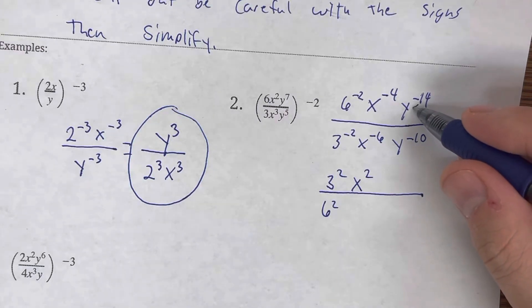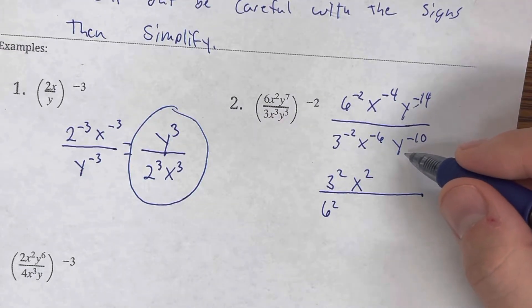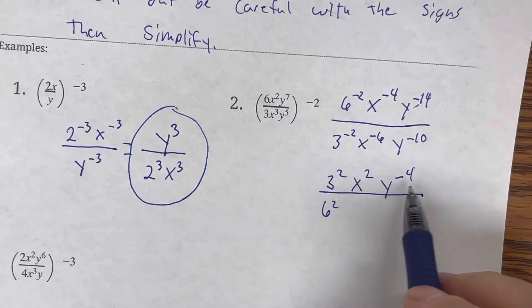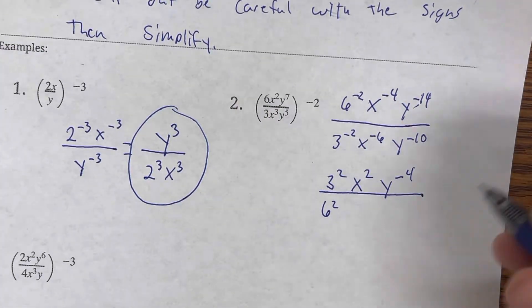Negative 14 minus negative 10 is negative 4. So, negative 4 on top. Now, I can't leave this negative 4. So, I got to do this one more time.